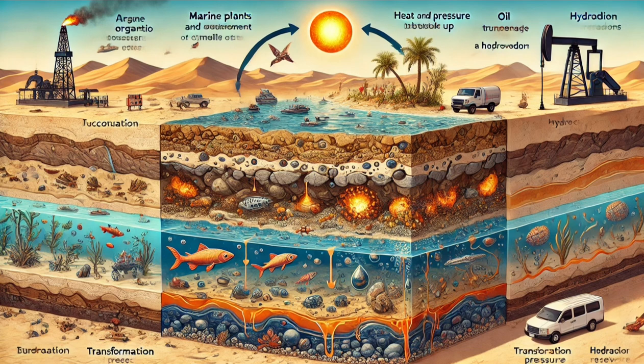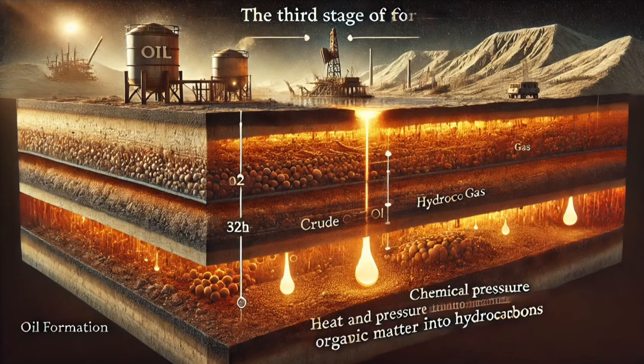Step 4: Migration and Trapping. Once formed, the oil started to migrate through porous rock layers. Eventually, it got trapped beneath impermeable layers of rock, forming massive underground reservoirs.